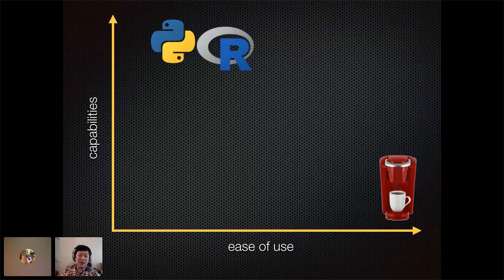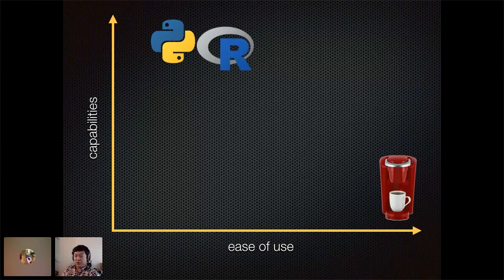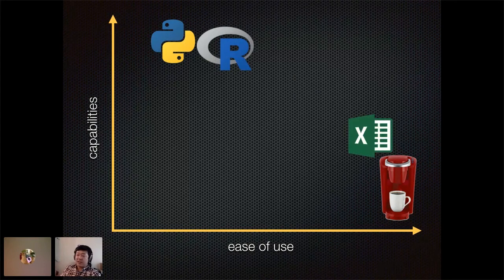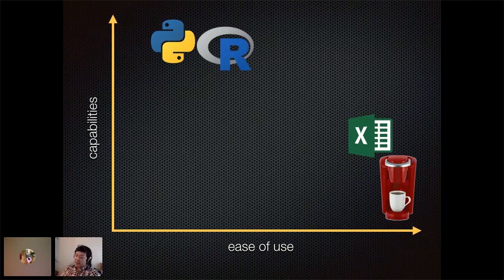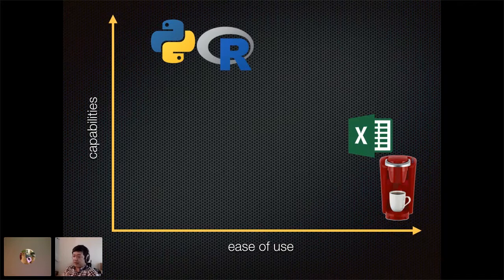At the other extreme, you have programming languages, which can do a lot of different things, but there's a steep learning curve to getting started. I put Microsoft Excel over here — it has a little bit more functionality than the coffee machine, but in many cases if you're doing a statistical analysis, you're still pushing a few keystrokes or buttons to run a very specific statistical test.